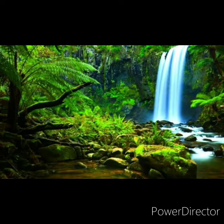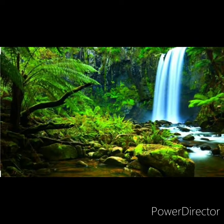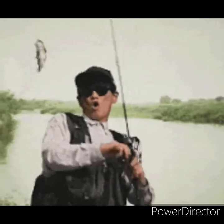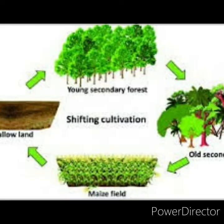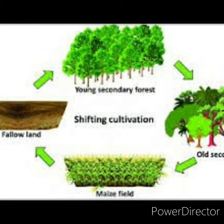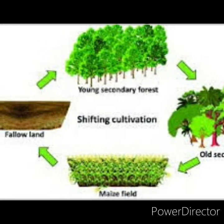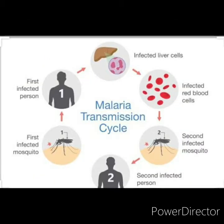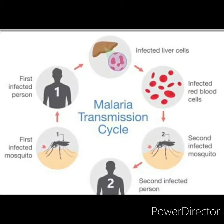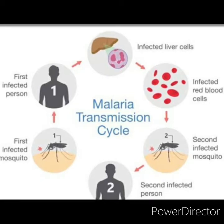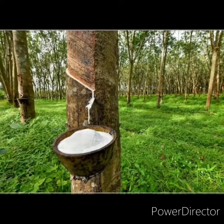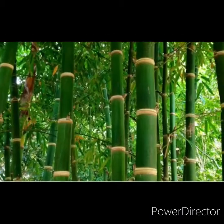Human settlements are found scattered here. They sustain their livelihood through food gathering, fishing, lumbering and shifting cultivation. Due to the humid nature of this biome, the people get afflicted to tropical diseases like malaria, yellow fever. The chief trees found here are rubber, bamboo, ebony.